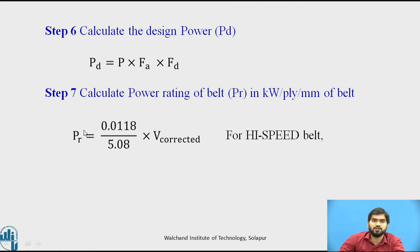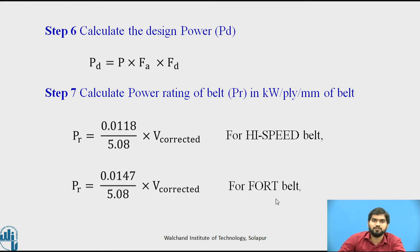This is the equation for finding pr. It is used for the high speed belt, and there is another equation for the fort belt. For example, if using a high speed belt at 5.08 m/s velocity, the power rating is 0.0118. We have to calculate the actual power rating for the corrected velocity.